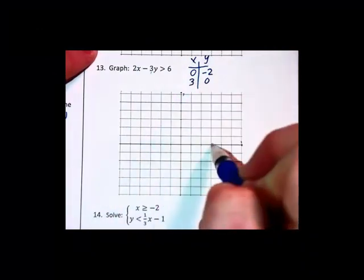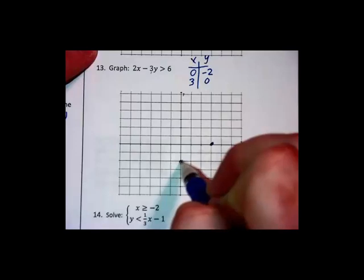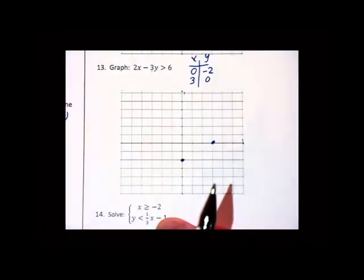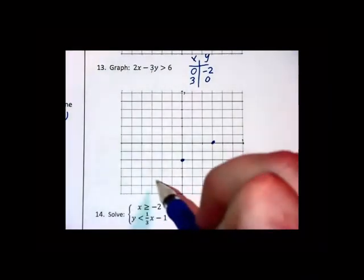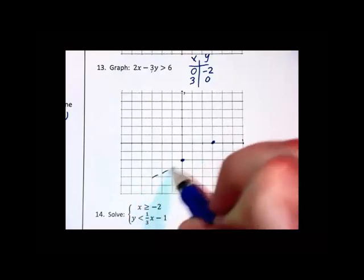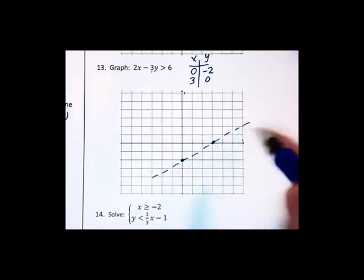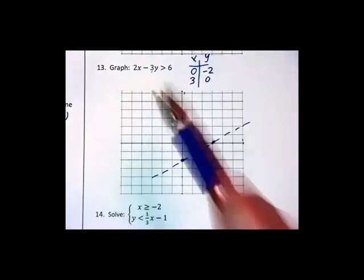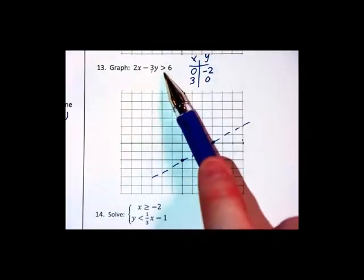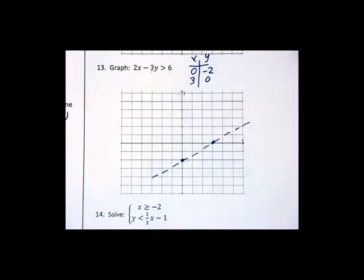So we have an x intercept at 3, a y intercept at negative 2. This is going to be another dotted line graph because we do not have an equal to in the equation. We cannot say greater than means shade above in this case because it is not in slope intercept form.